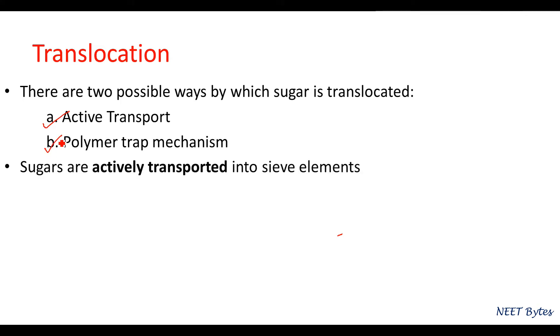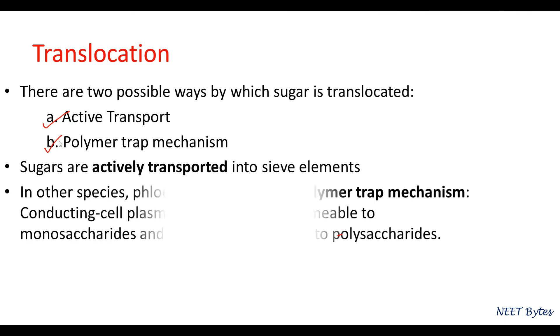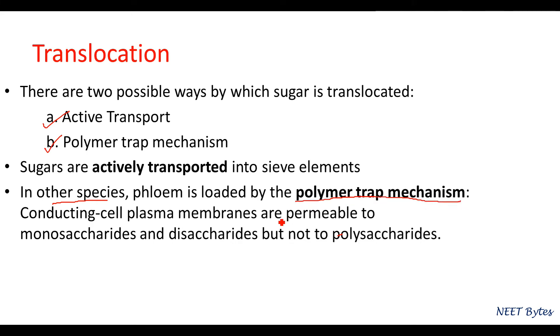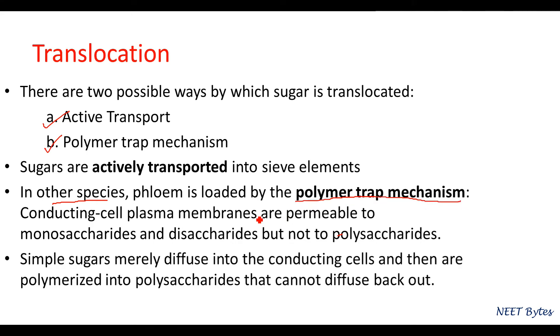The conducting cell plasma membranes are permeable to monosaccharides and disaccharides but not to polysaccharides. Simple sugars merely diffuse into the conducting cells and are polymerized into polysaccharides so they cannot diffuse back out. That's how it works.